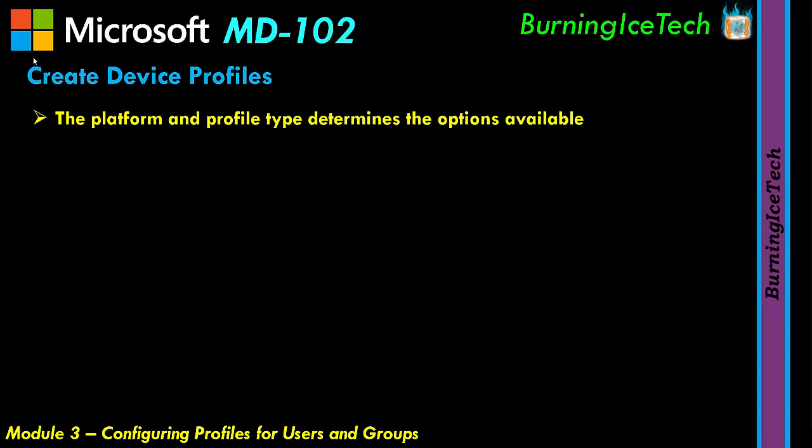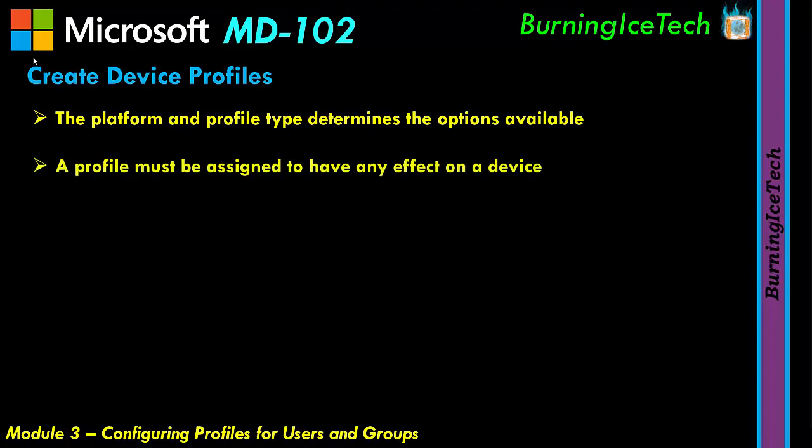The kind of profile we're talking about here is the one you create as an administrator — it has a bunch of settings and configurations, and you apply it to a group of devices or users. For example, if you've got a sales department and want to apply a certain configuration to all those people, you choose a group in Intune that includes those users and apply the profile.